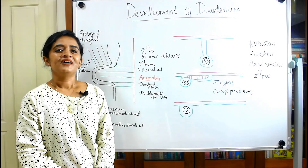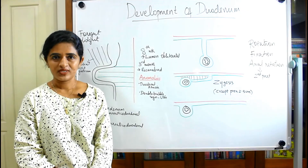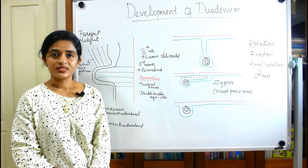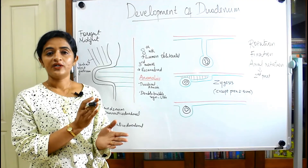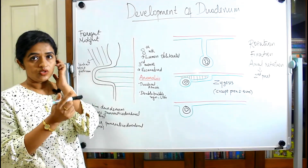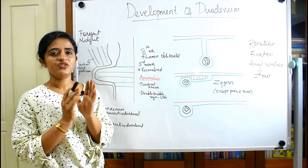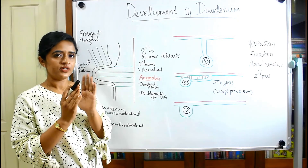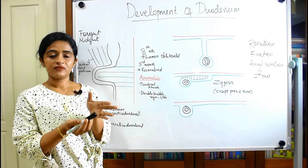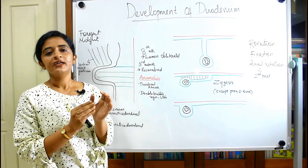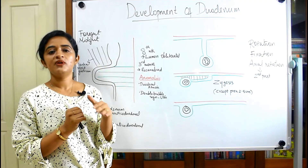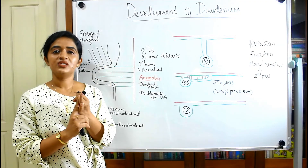Welcome back. We are continuing with the development of the gastrointestinal system. In this session I'm planning to talk about the development of the duodenum. The duodenum is derived partly from the foregut and partly from the midgut. The part above the major duodenal papillae — which is the common entry point for the common bile duct and the pancreatic duct — is derived from the foregut, and the part below the major duodenal papillae is derived from the midgut.